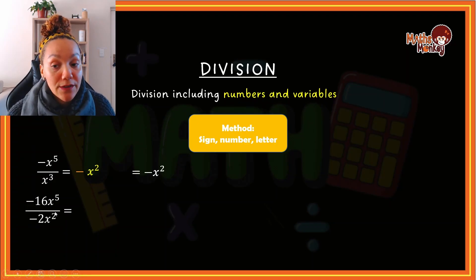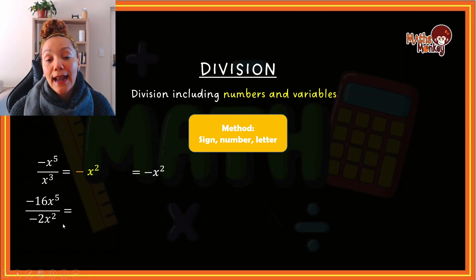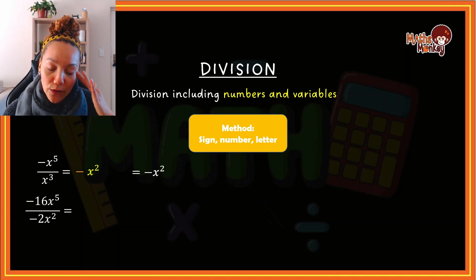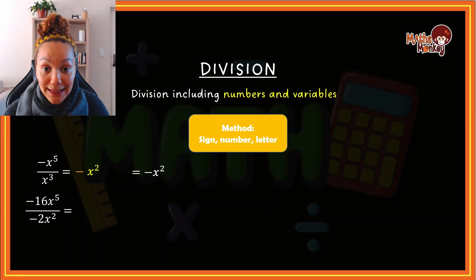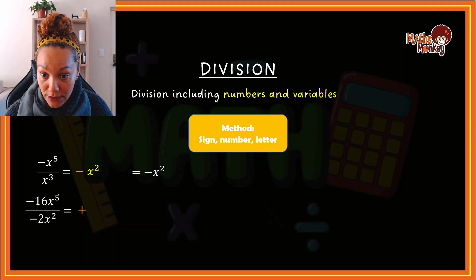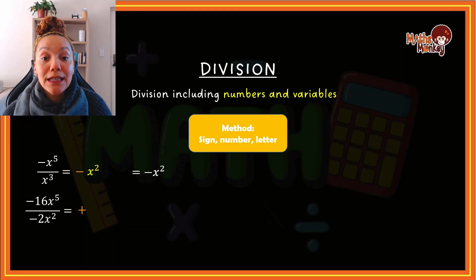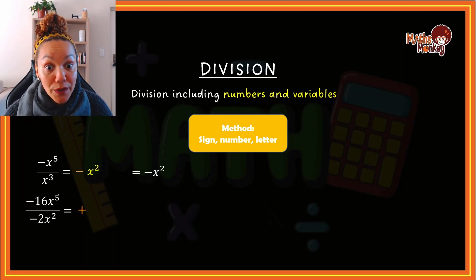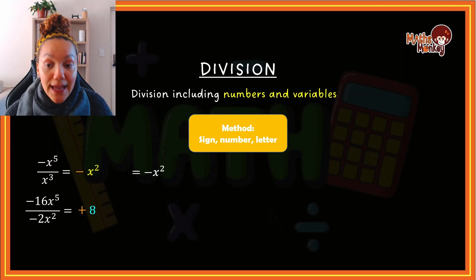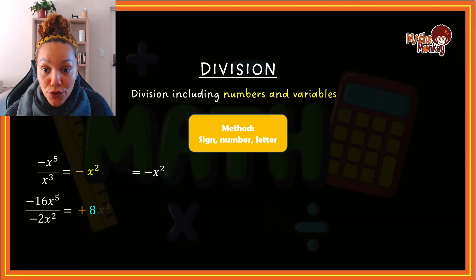Let's do another example. I know this is a division question because I see a fraction sign. My method is sign, number, letter. The sign: negative divided by negative is a positive value. The number: 16 divided by 2 equals 8. The letter: x to the 5 over x to the 2 — I put 5 minus 2 and I end up with x to the power of 3.